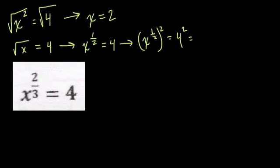Multiply these two, that's a half times 2, which is 2 over 2, or 1, and then x is equal to 16. 4 squared, root of 16, that makes sense. The square root of 16 is 4.